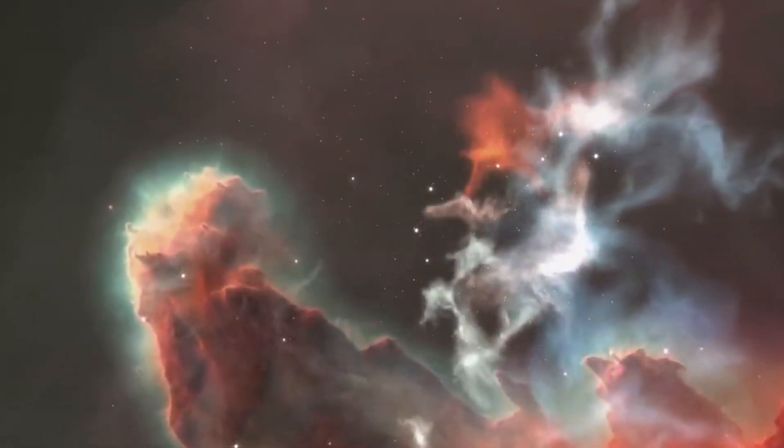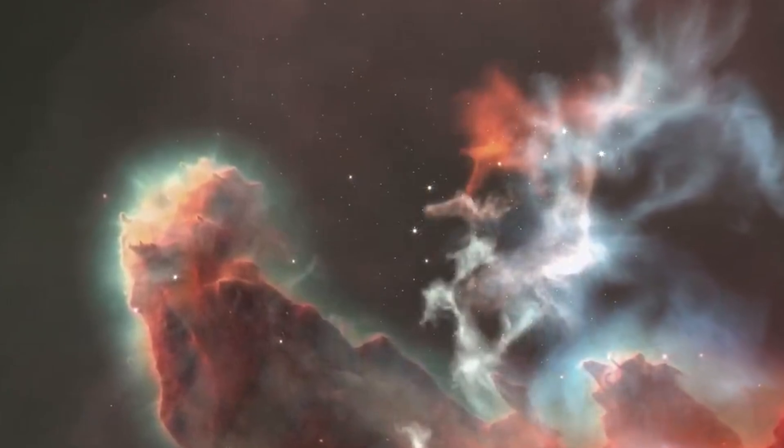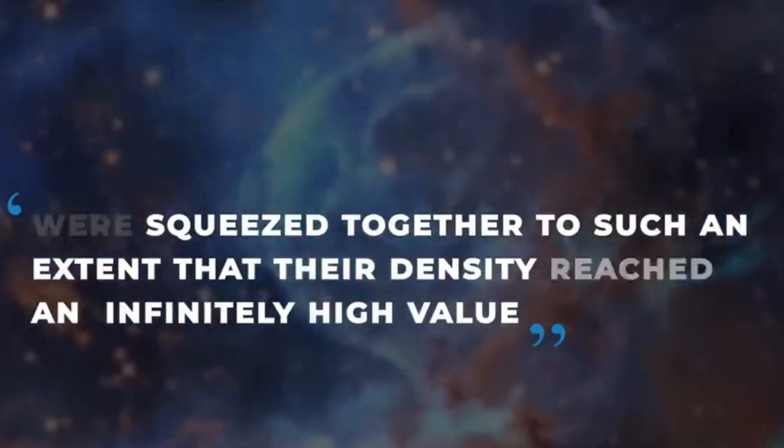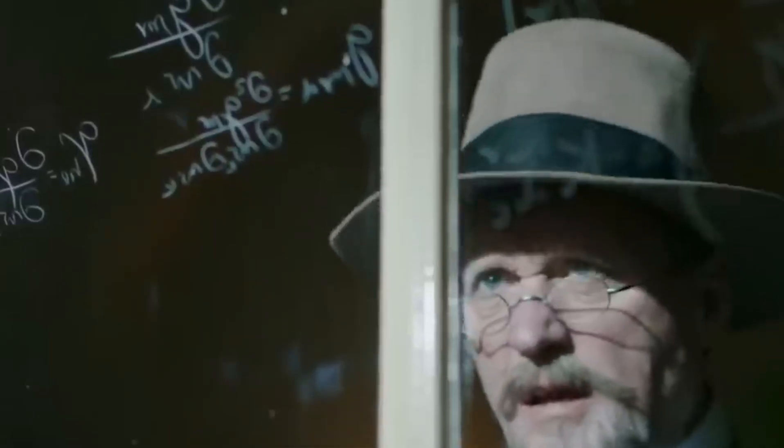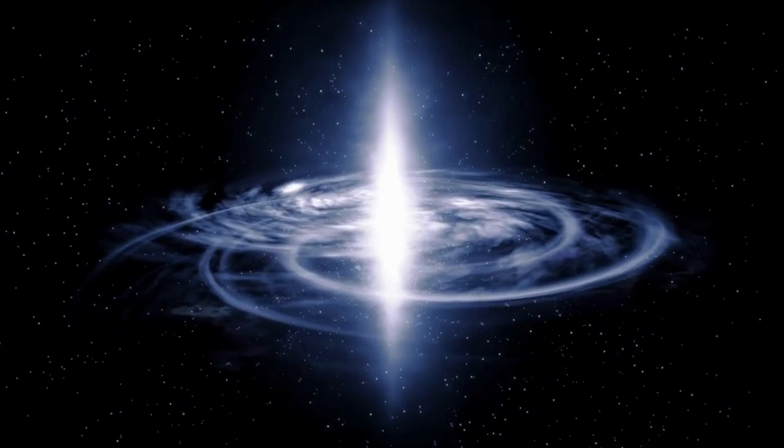Back then, we knew that we could extrapolate the hot Big Bang back in time, back to the first fraction of a second of the observable universe's history. Between what we could learn from particle colliders and what we could observe in the deepest depths of space, we had lots of evidence that this picture accurately described our universe. But at the absolute earliest times, this picture breaks down.